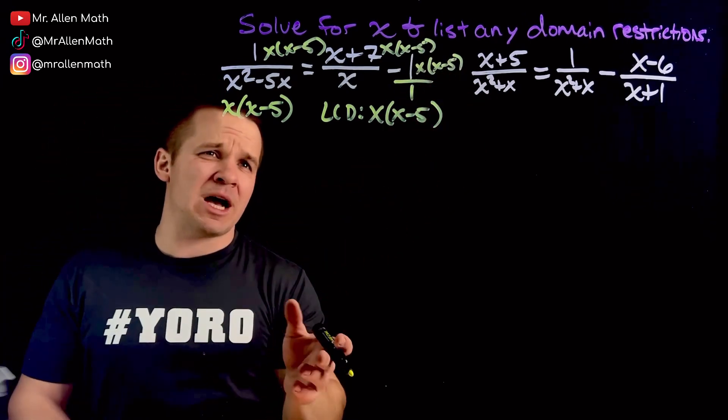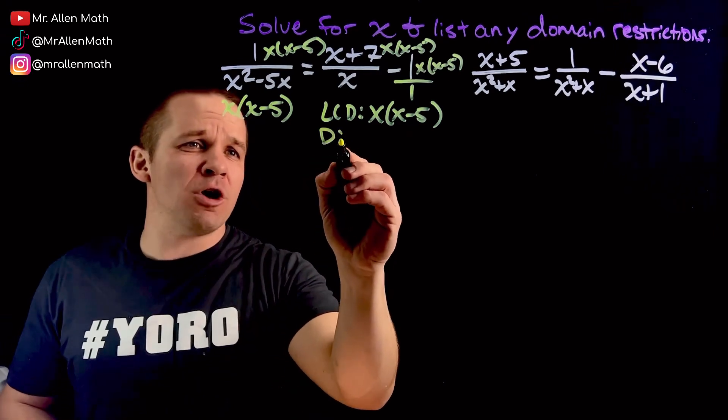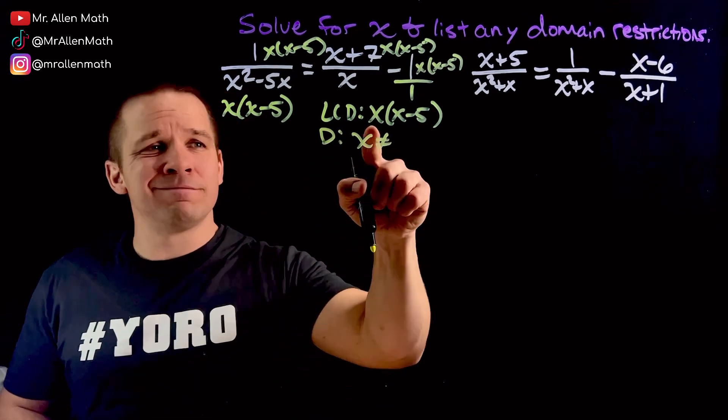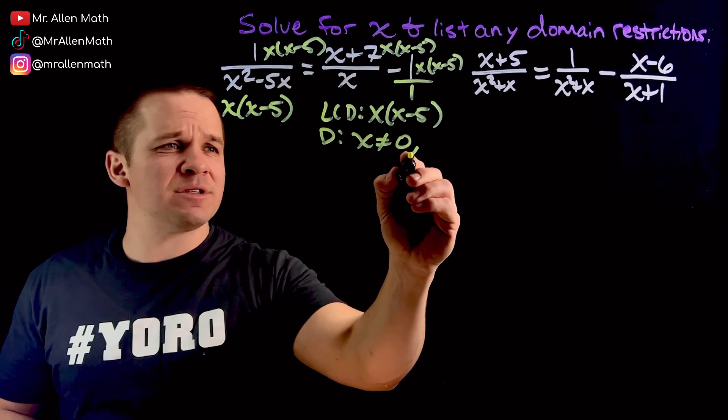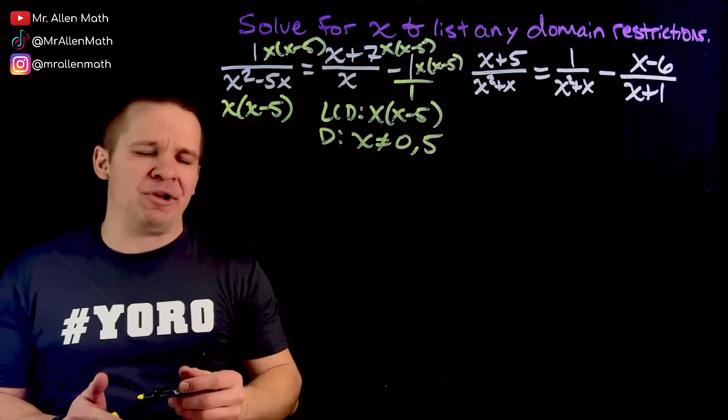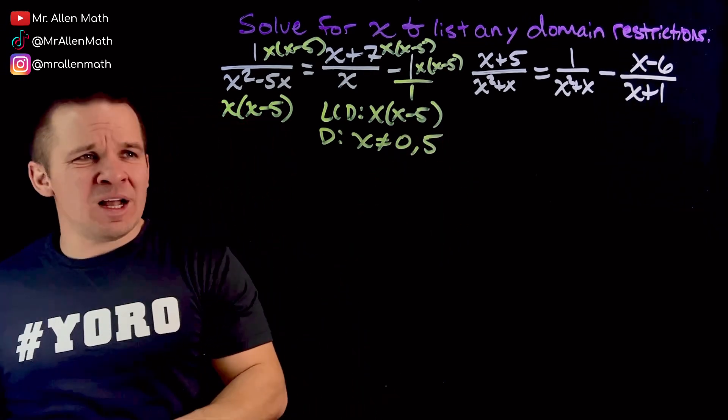Right now also might be an appropriate time to list out our domain restrictions. Domain, x cannot equal what? 0 and positive 5. 0, positive 5. Lovely.